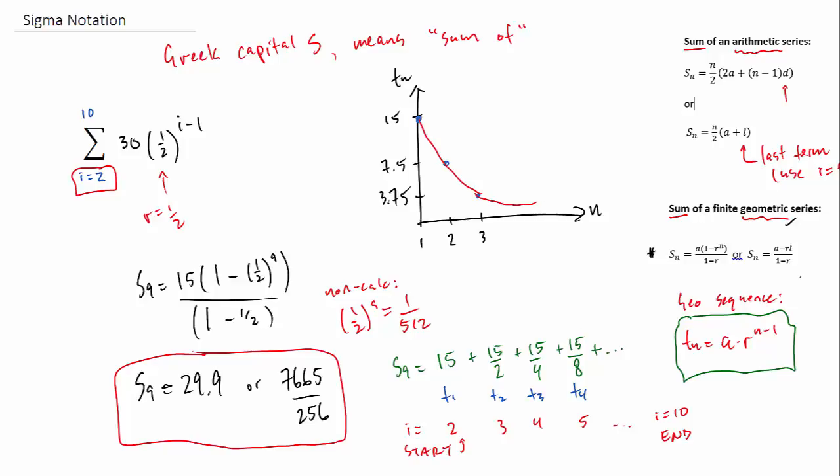We're going 15 and then 7.5 and so on, 3.75. And we sort of get this decay graph. And really what we're doing by finding the sum is actually sort of the area underneath that function. And what we see as well is that this thing converges because the function is getting smaller and smaller. And so it actually has a horizontal asymptote along the x-axis there.